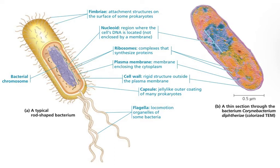The job of ribosomes is to do translation — the reading of messenger RNA in order to string amino acids together and make a protein. Since we're going from the language of nucleotides to the language of amino acids, we call that translation. The only other thing inside a prokaryotic cell is the cytoplasm or cytosol, which is just the water and everything dissolved in it inside the organism.